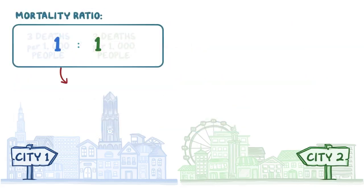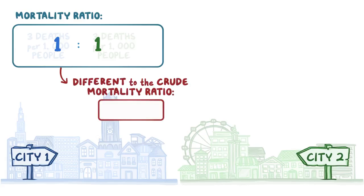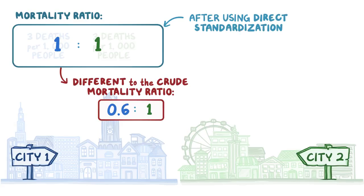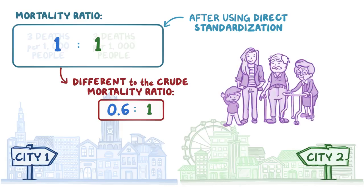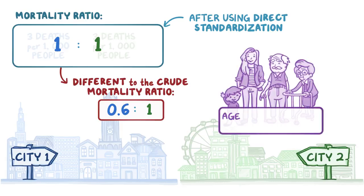This is different from the crude mortality ratio of .6 to 1. After using direct standardization, we can see that the mortality rate is actually the exact same in City 1 compared to City 2. Because the crude and adjusted mortality rates were different, it's clear that the age distribution was in fact confounding the true mortality rate in City 2.